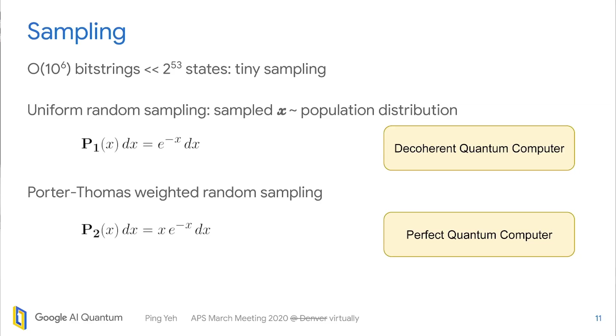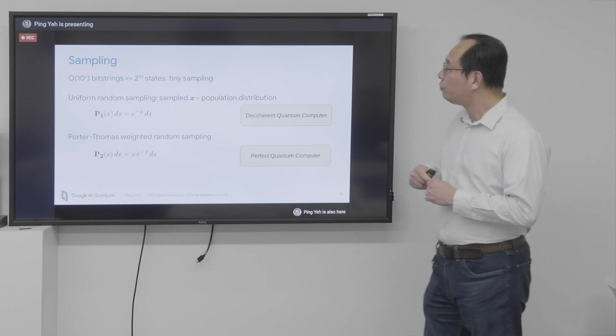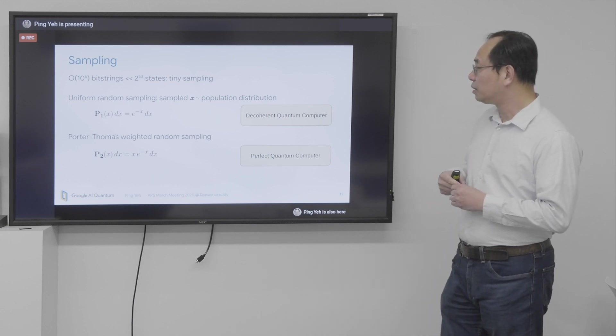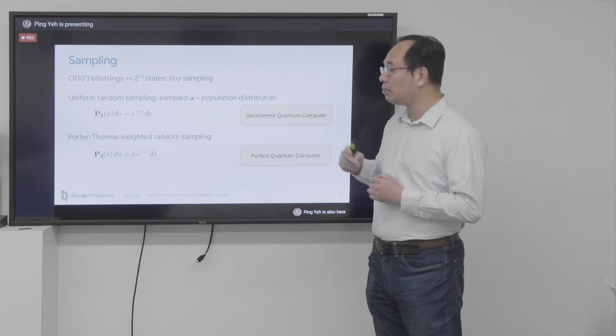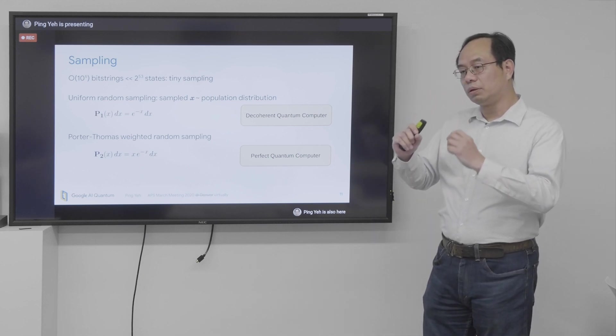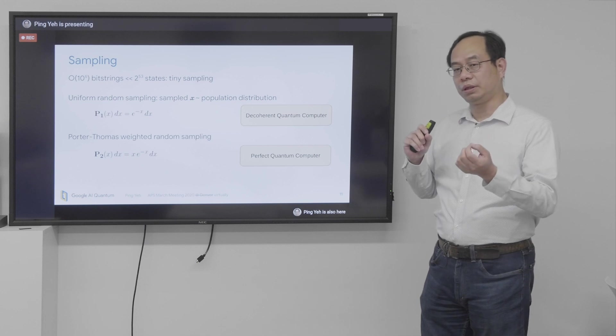So now we do sampling. So typically we sample about millions of bit strings for each random circuit. And for 53 qubits, that's, of course, much, much smaller than the Hilbert space. So it's a tiny sampling. And there are two different sampling strategies that we are interested in. The first one is a uniform random sampling. That means each qubit gives you 0 or 1 in a 50%, 50% chance.